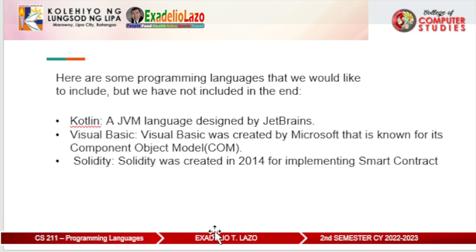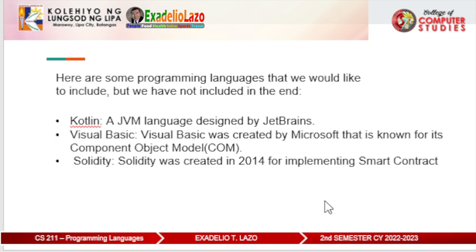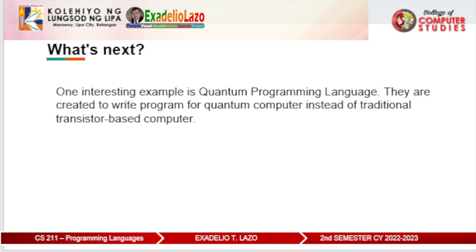Here are some programming languages that we would have liked to include but did not in the end. Kotlin is a JVM language designed by JetBrains, adopted by Google as the primary language of Android in 2019. Visual Basic was created by Microsoft, known for its Component Object Model, specialized for GUI software development for Windows and widely used in Microsoft Office as Visual Basic for Applications. Solidity was created in 2014 for implementing smart contracts. Looking ahead, one interesting example is Quantum Programming — quantum programming languages are created to write programs for quantum computers instead of traditional transistor-based computers.